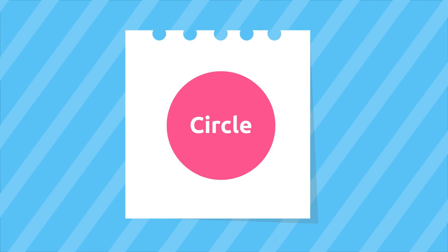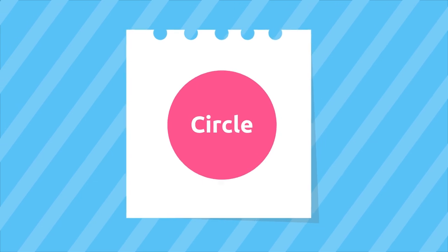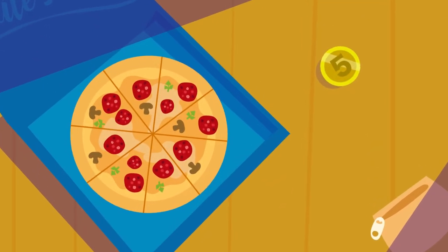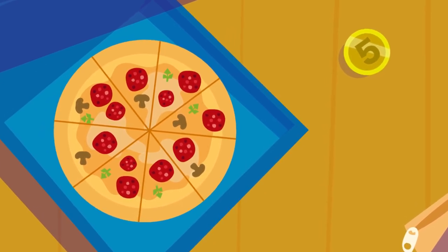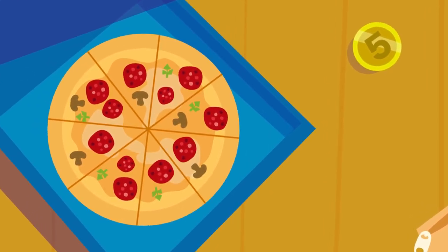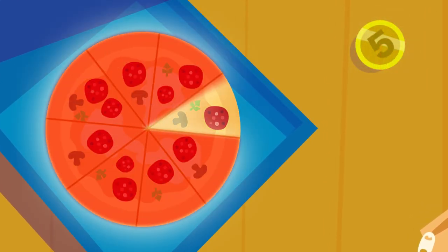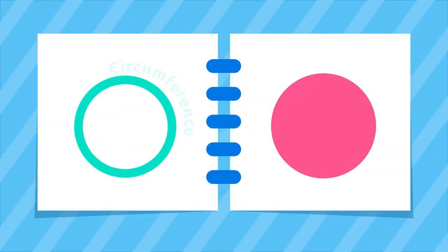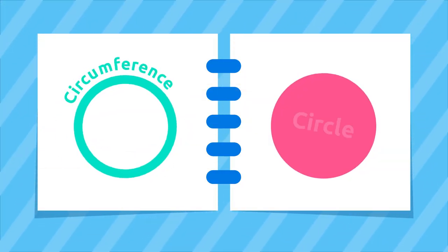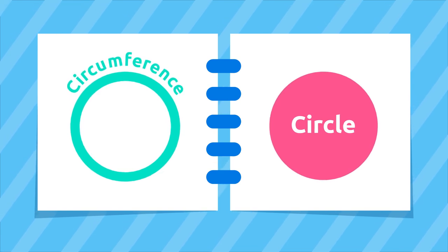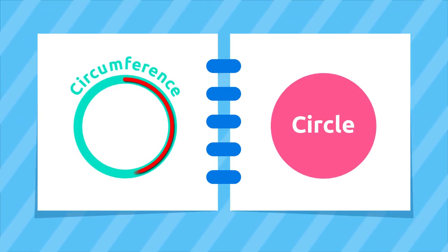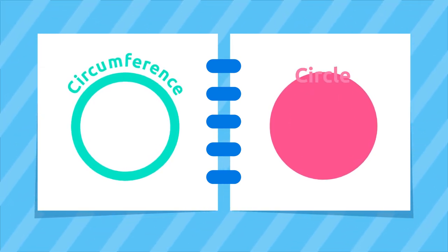The circle is a plane figure whose boundaries are a circumference. Look around you — do you see any circles? That's right: this coin or this pizza. The difference between a circumference and a circle is that the circumference is the line around the circle.